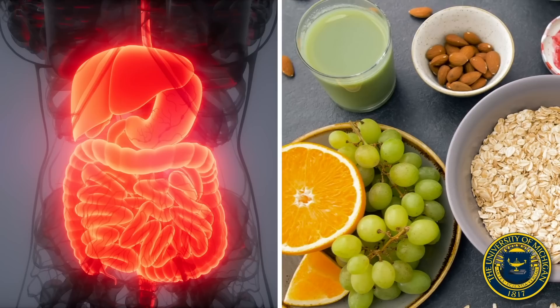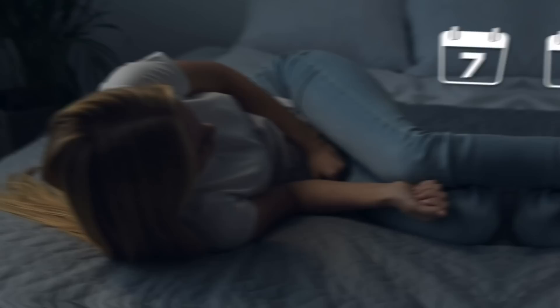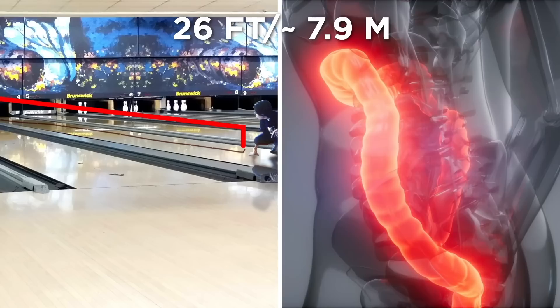To ensure her digestive health was in tip-top condition, nutritionists from the University of Michigan first placed the woman on a super fiber-rich diet. Instead of relying on pure willpower to hold it all in, she was also fitted with a specially designed butt plug that would prevent any premature excretions. After a week of painful endurance, the time had finally come. The record-breaking poop was the length of the woman's entire colon, at a massive 26 feet long, and was passed in one uninterrupted sitting.